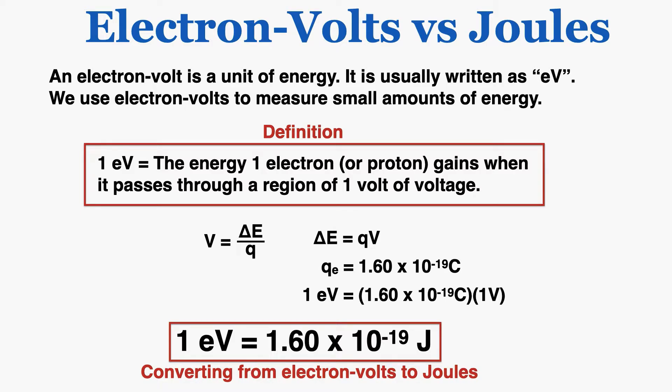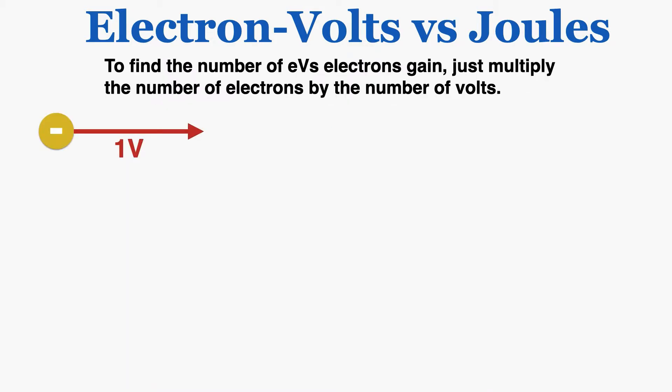This is how you would go from one unit to the other — you can use this identity to convert between them. One way to remember this is that one electron volt is literally one electron's worth of charge, but expressed as joules instead of coulombs, because it's just multiplied by one volt. To find the number of electron volts electrons gain, just multiply the number of electrons by the number of volts.